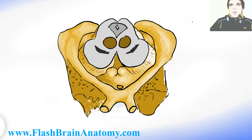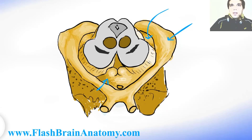So first, over here we had the lateral geniculate body, and over here we had the medial geniculate body. These two round bodies over here are the mammillary bodies. There are three parts of the mesencephalon. The border between two parts is here.